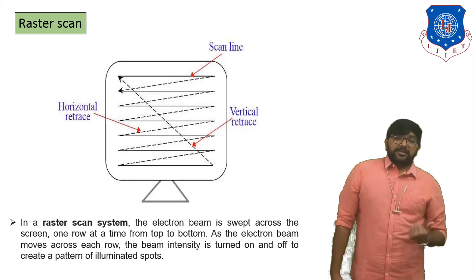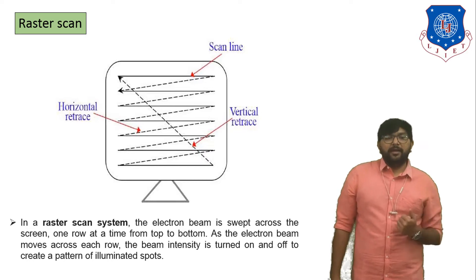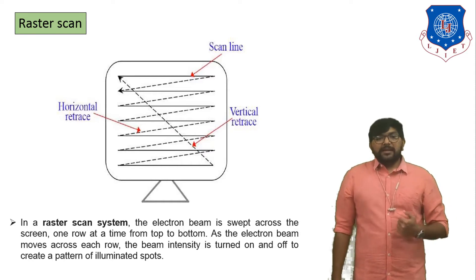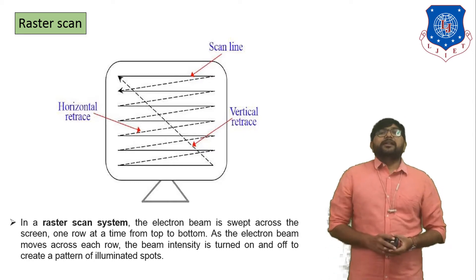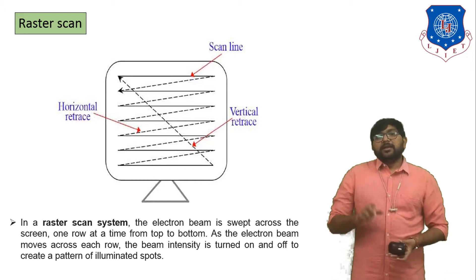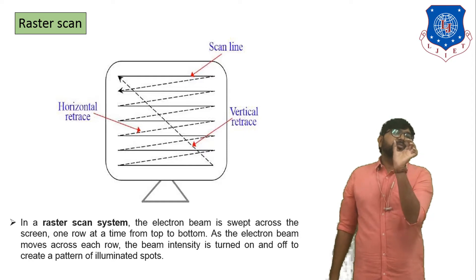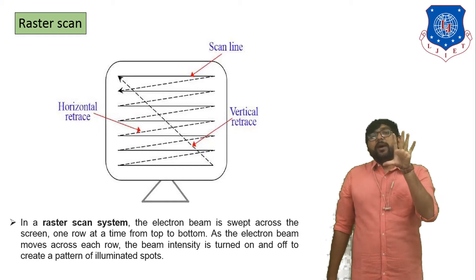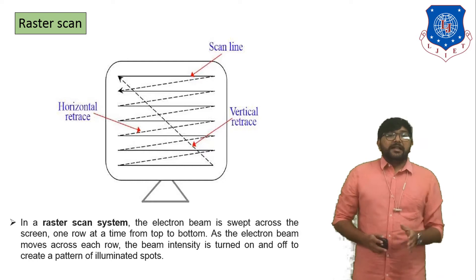In a raster scan system, the electron beam is swept across the screen one row at a time from top to bottom. As the electron beam moves across each row, if beam intensity is turned on we create a pattern of illuminated spots. So if the electron beam passes through any row, if the intensity of a pixel is 1 that pixel is turned on and off according to the binary value of the pixel — 0 or 1. This is the raster scan display device.